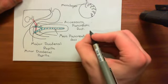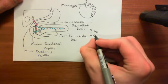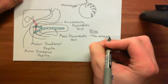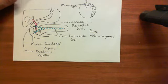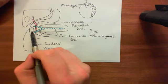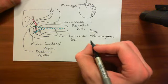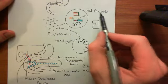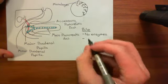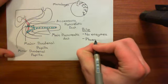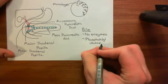What actually is within bile? What is within this secretion that the liver is producing? The key thing to understand about bile is that there are no enzymes — that's a common misconception. The liver does not send enzymes within the bile; bile does not contain enzymes. Instead, it contains things that are going to help emulsify the lipid molecules. The key thing it contains for emulsifying the lipid molecules — splitting one massive fat globule into many little droplets — is phosphatidylcholine.